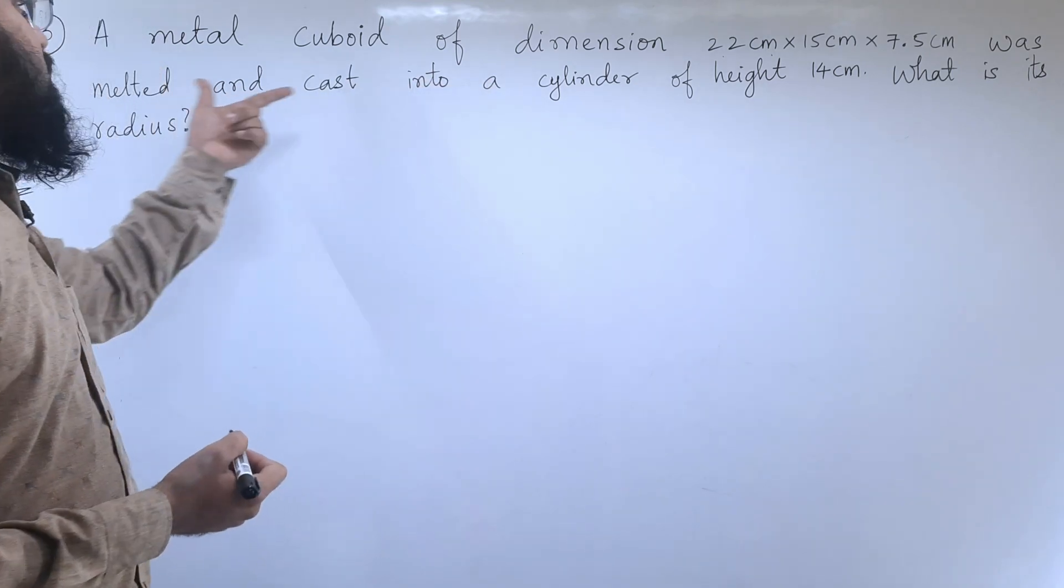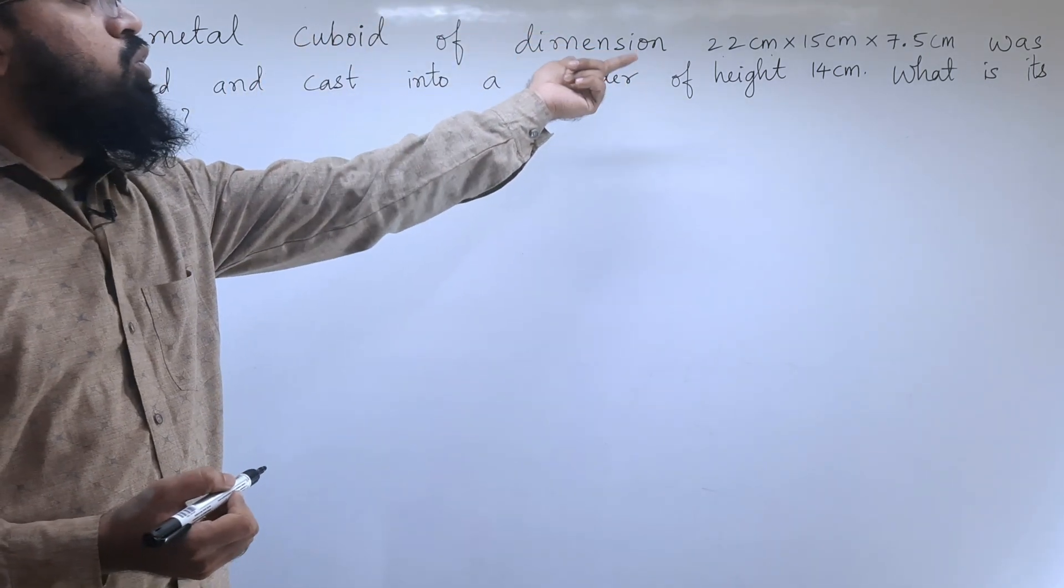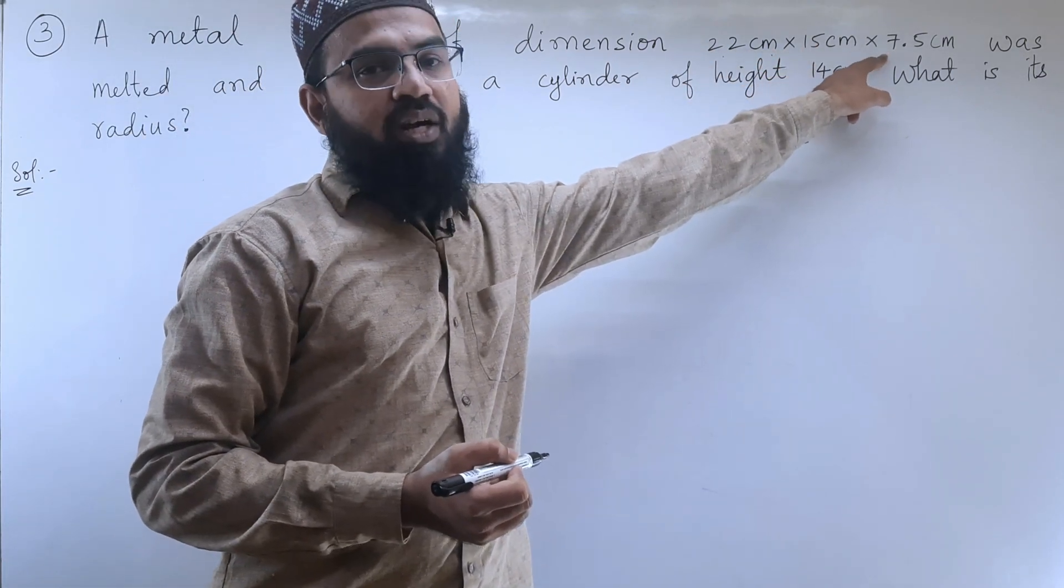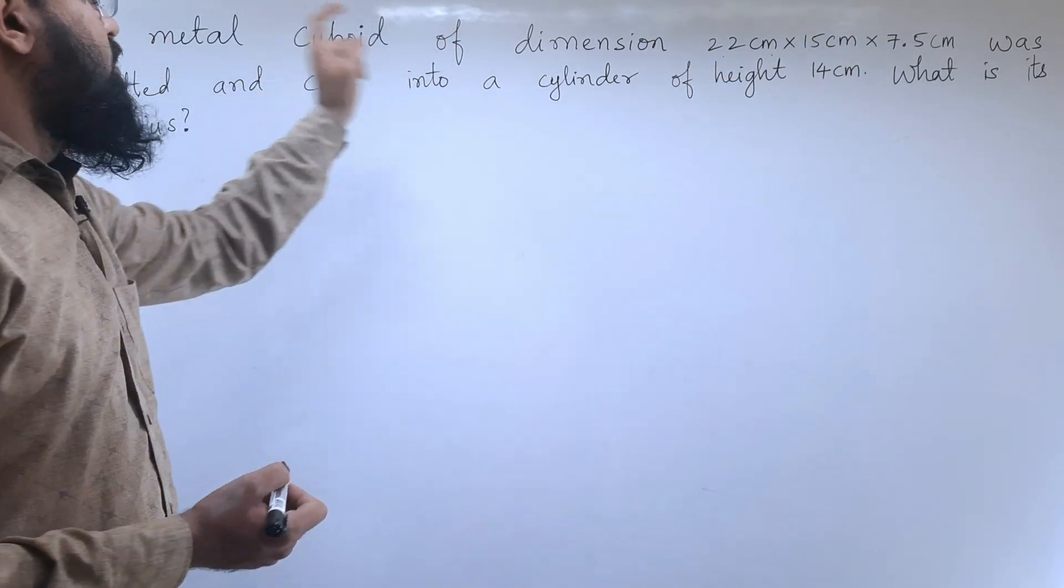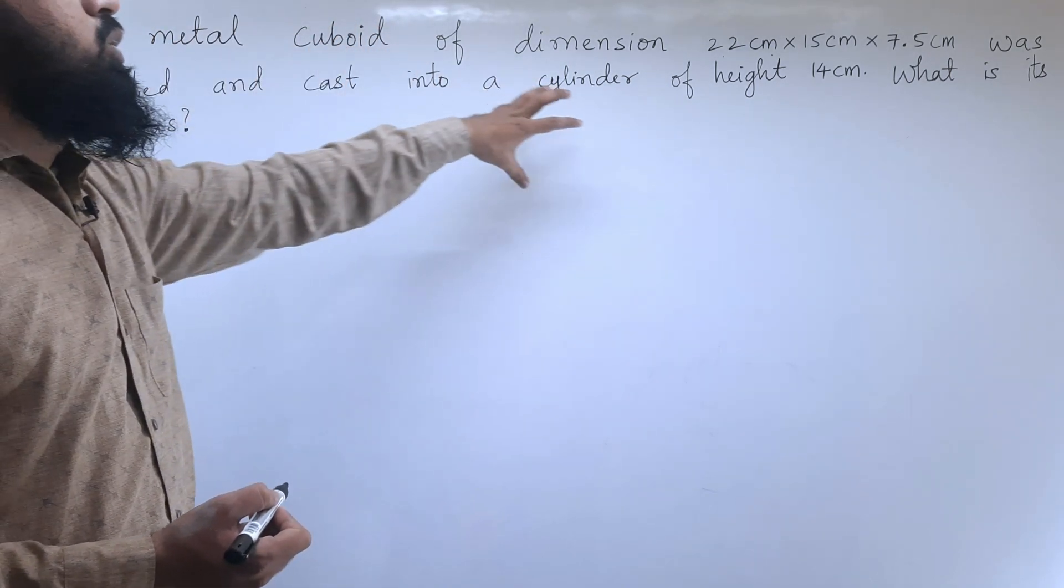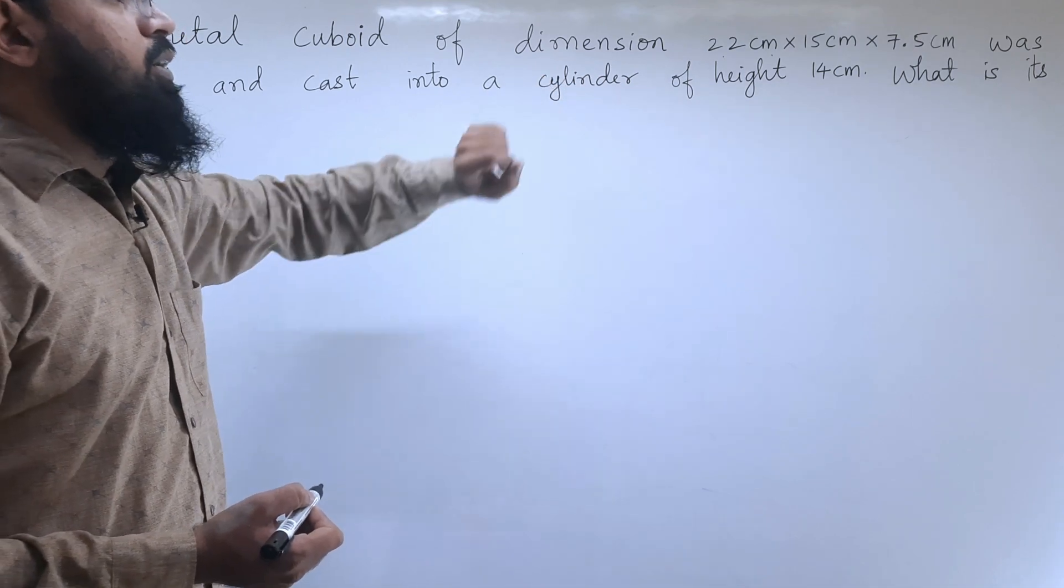There is a cuboid whose dimensions are 22 centimeter, 15 centimeter, 7.5 centimeter. This cuboid is melted and casted into a different shape, that is cylinder.